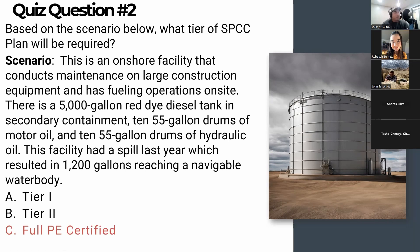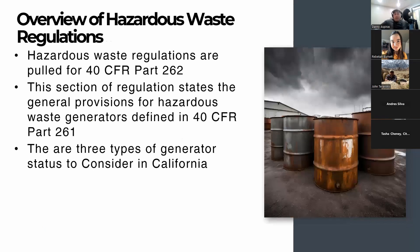Now moving into hazardous waste management in California. Hazardous waste regulations are drawn from 40 CFR Part 262. This section states that general provisions for hazardous waste generators are defined in 40 CFR Part 261 — your types of generators are in 261, while the actual provisions are in 262. There are three types of generator statuses to consider in California.